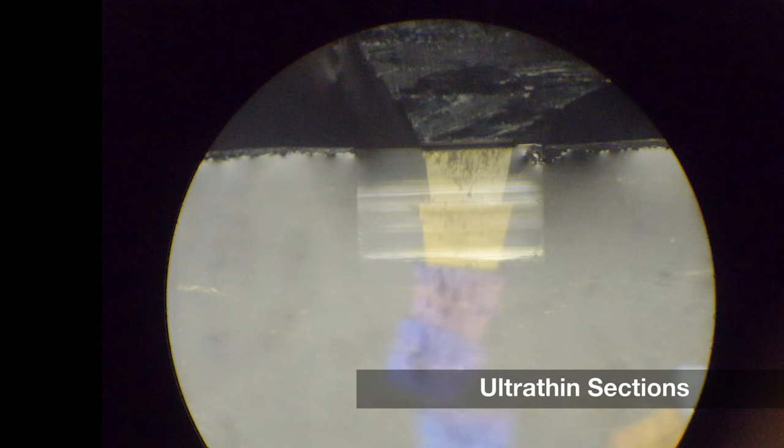The different colors of the sections result from interference between the rays of light reflected off the upper and lower surfaces of the sections. Colors vary according to thickness.